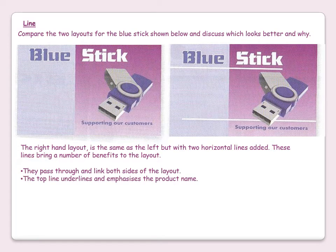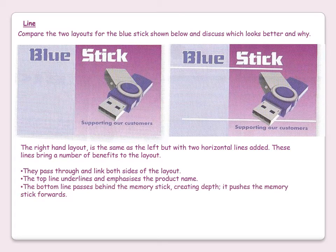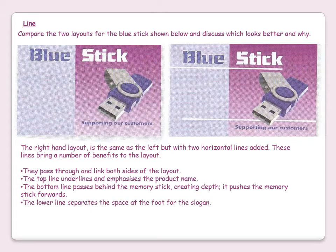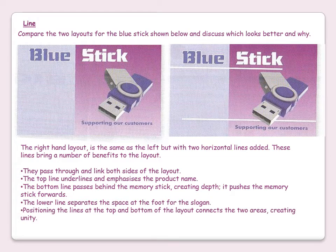The top line underlines and emphasizes the product name Blue Stick. The bottom line passes behind the memory stick, which creates depth — it pushes the memory stick forward. The lower line separates the space at the foot of the slogan, so 'supporting our customers' is separated from the rest of the article. Positioning the lines at the top and bottom of the layout connects the two areas together, creating unity.